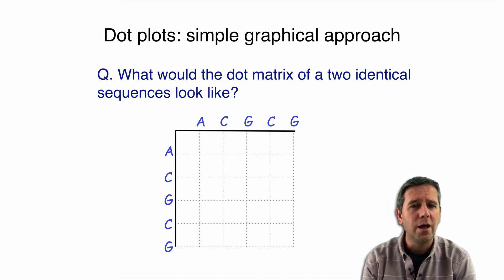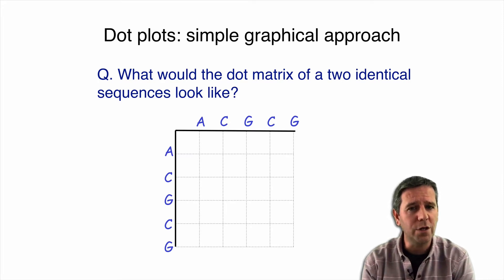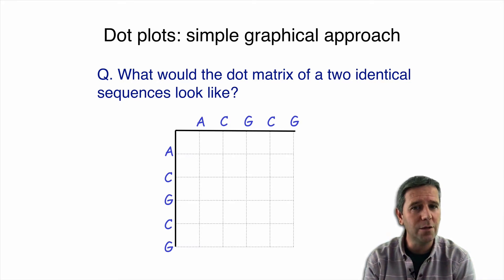Okay, question then. What would a dot matrix of two identical sequences look like? By identical sequences, I mean the sequence that we place on the two sides of our little table here, or our dot plot, are the same. See their characters are the same. What would this look like?